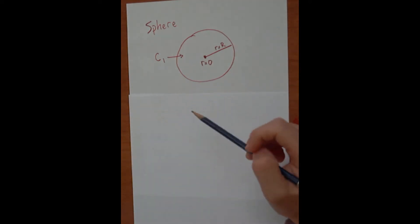For our coordinate system, we'll set up at the very center of the sphere. R is going to be equal to zero, and the radius will be capital R.